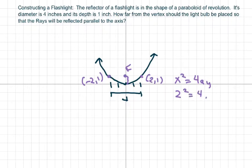Divide by four, you get a equals one, so this would be one inch. The bulb, which is the focus here, should be one inch from the vertex. Thank you and have a nice day, bye bye.